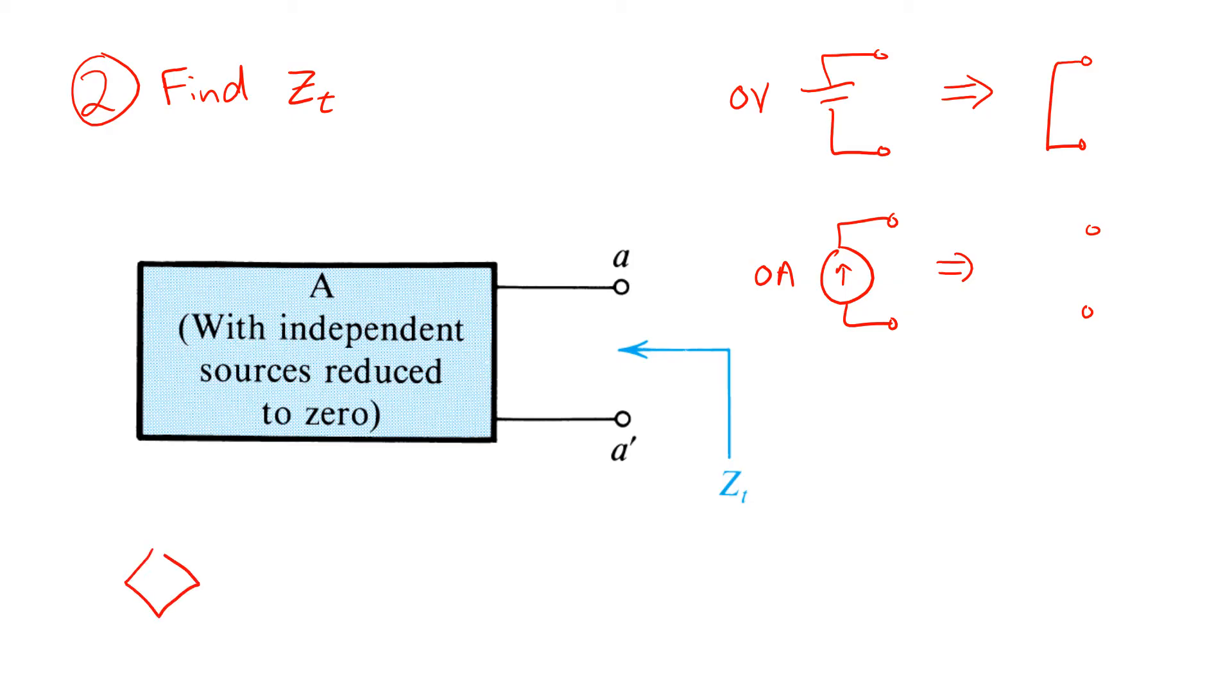Note that any dependent sources inside A can remain unchanged for this part of the analysis.